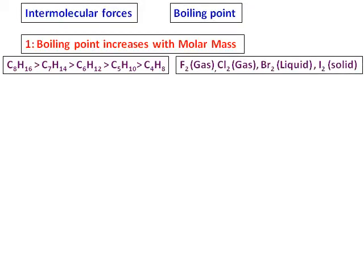Some examples: C8H16 is heavier than C4H8, so it has a higher boiling point. Same way, in the group 7 compounds — fluorine, chlorine, bromine, iodine — as the molar mass increases, the state also changes. Fluorine and chlorine are gases, whereas bromine is a liquid and iodine is a solid.